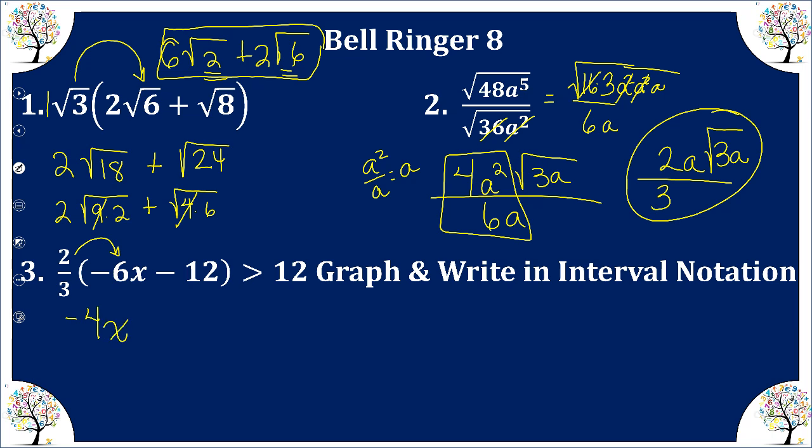2 thirds times minus 12 is going to be minus 8. It's greater than 12. Let's add 8 to both sides using the addition property of equality, we get negative 4x is greater than 20.